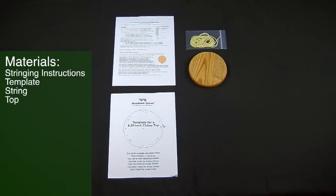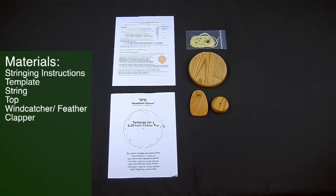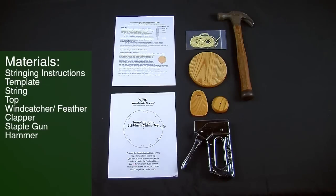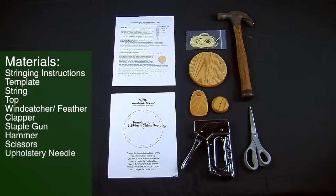A wood chime top. A wind catcher. A clapper, that's the part that hits the tubes. A staple gun. You'll also need a hammer, scissors, another good tool to use is a large needle like an upholstery needle, and a ruler.